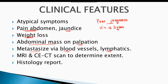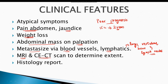The most common sites for metastasis include the lungs, vertebra, brain, and lymph nodes, with occasional metastasis to the adrenal glands. Radiological investigations such as MRI and contrast-enhanced CT scan are performed to determine the extent of the tumor and identify metastatic lesions. Definitive diagnosis is based on the histological report of a biopsy.